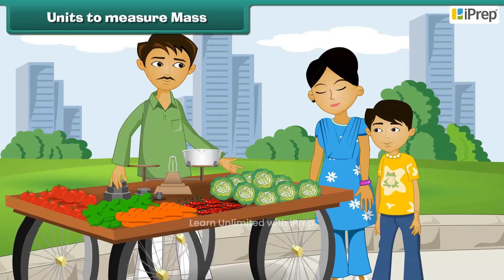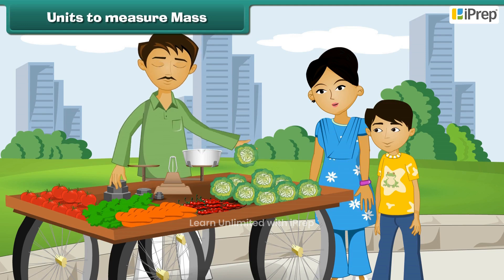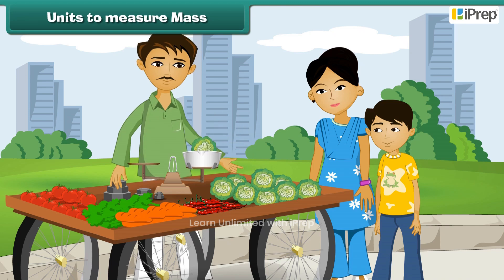You might have gone along with your mother for buying vegetables. You must have heard your mother asking for 1 kilogram cabbage, 5 kilogram potatoes, 100 grams green chili, etc. to the vegetable seller.